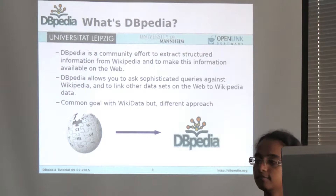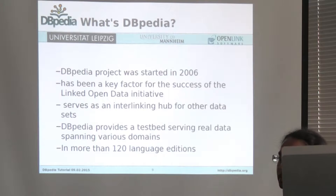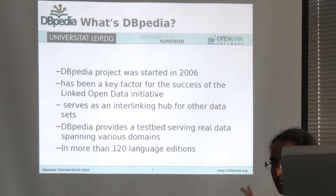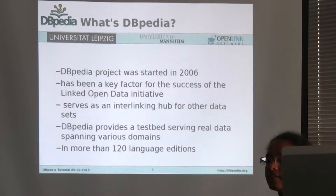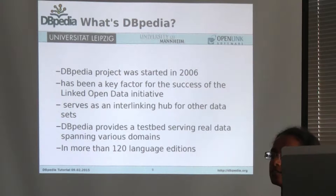DBpedia started in 2006 and played a very key role in linked open data — it worked as the central point because most datasets tried to link to it, since DBpedia covers a wide variety of topics. There are also other language editions of DBpedia; currently they have more than around 120 languages, including most languages, so they have information from multiple languages.